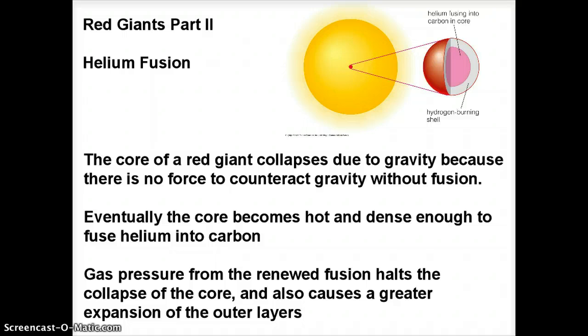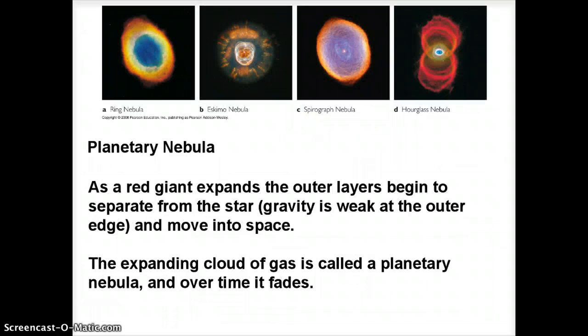We need to look at the outer layers and the core separately. I'm going to start with the outer layers. The outer layers are gradually separating away from the star because as you go further and further away from the core, gravity is getting weaker. You can almost think of this as the outer layers evaporating into space. You did a calculation in your homework of the density of a red giant and it's very small, thinner than air.